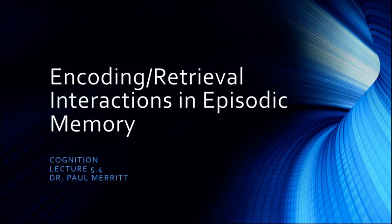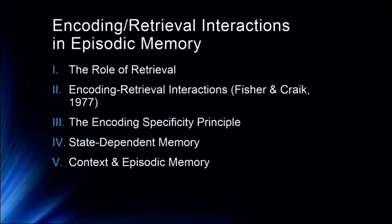Hello, and welcome to lecture number four in module number five on this online series in cognition. We just finished up talking about elaborative processing in memory. We're going to move now and talk about how encoding and retrieval interact in episodic memory. We'll start off talking about the role of retrieval, then encoding-retrieval interactions, a famous study by Fisher and Craig, the encoding specificity principle, state-dependent memory, and how context can affect episodic memory.